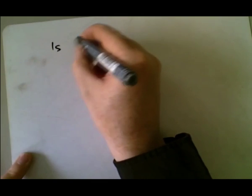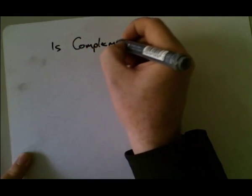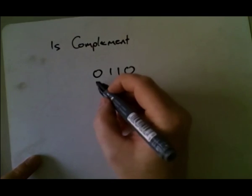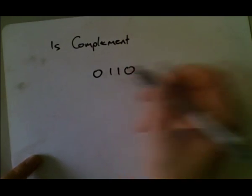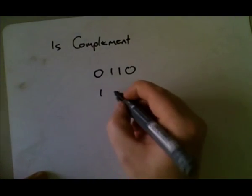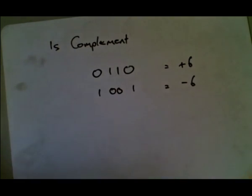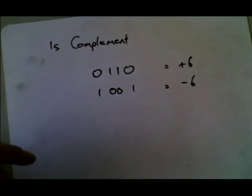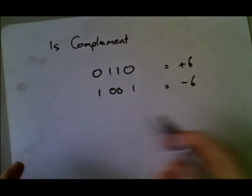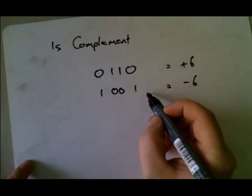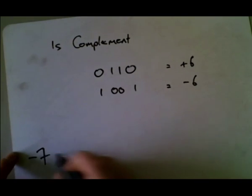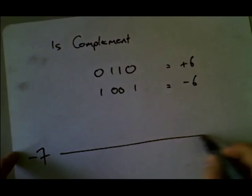There are other ways, and what people decided to do was use something called one's complement. What you're doing in one's complement, let's go back to our plus 6. Instead of just flipping this bit to represent the sign, you flip everything. So this is plus 6, this is minus 6. And the advantage now, because we've flipped everything, is instead of saying this is how far we are from 0, we're saying this is how far we are to the right of our number line.